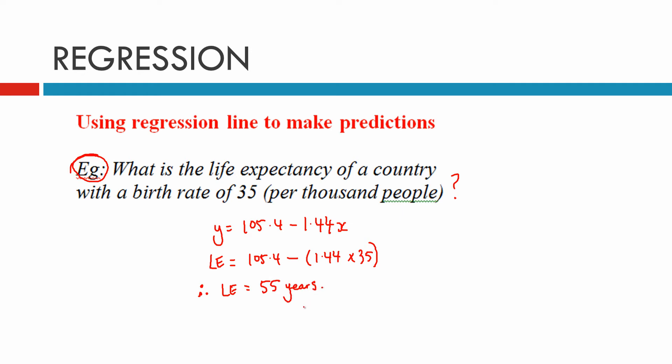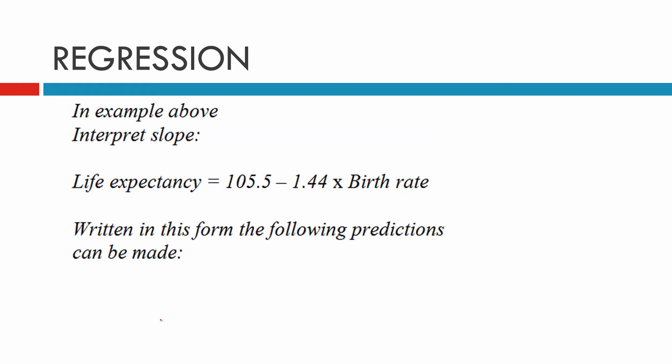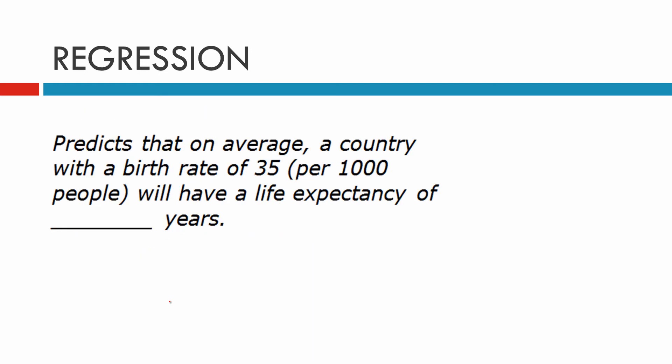We can say we can predict that on average, a country with a birth rate of 35 per 1,000 people will have a life expectancy of 55 years. So we've written that out now.